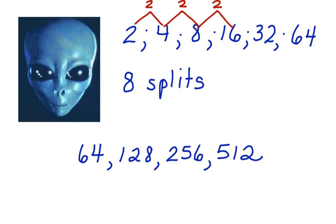This geometric sequence shows that there would be 512 aliens after eight splits.